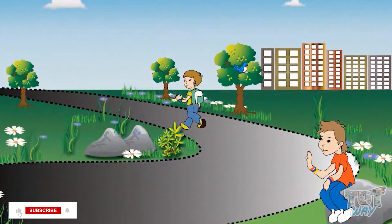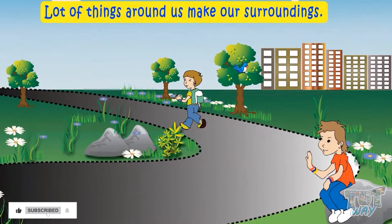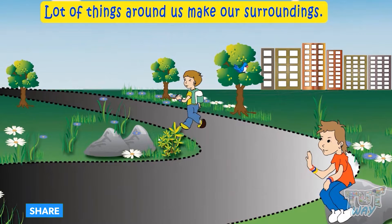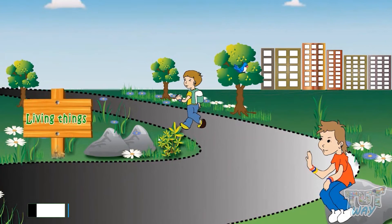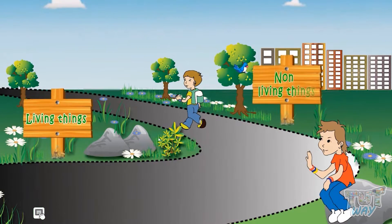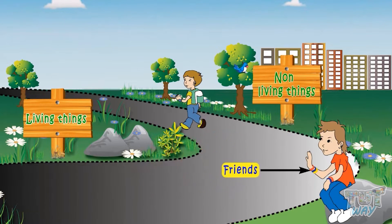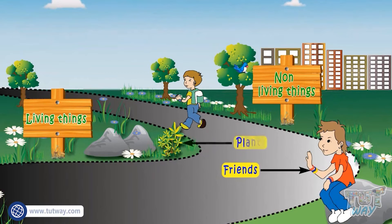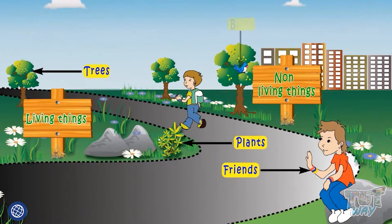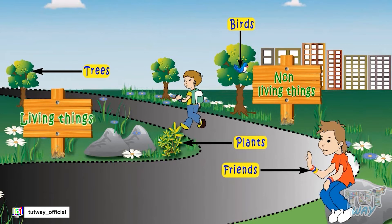Kids, a lot of things around us make our surroundings. Some of them are living and some of them are non-living. Like you, your friends, these plants, these trees, and these birds are examples of living things.